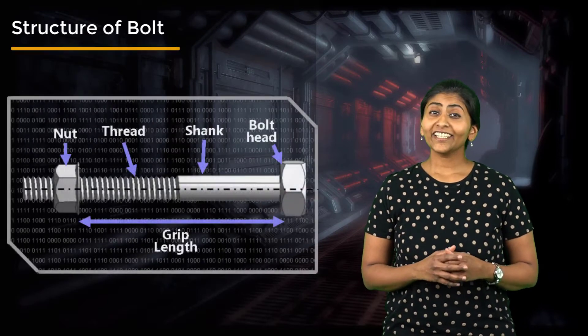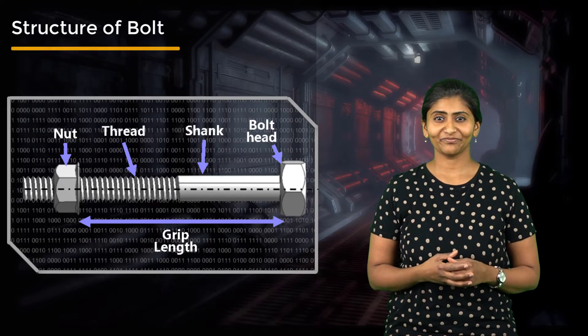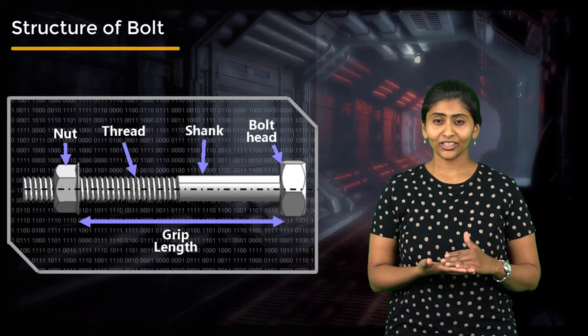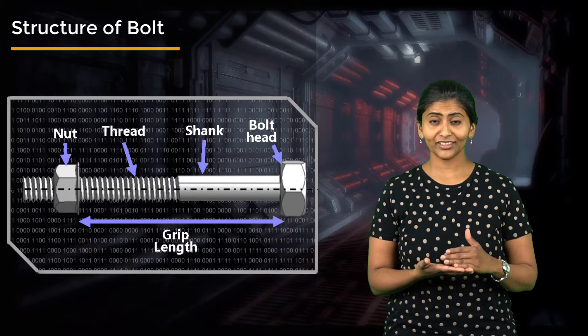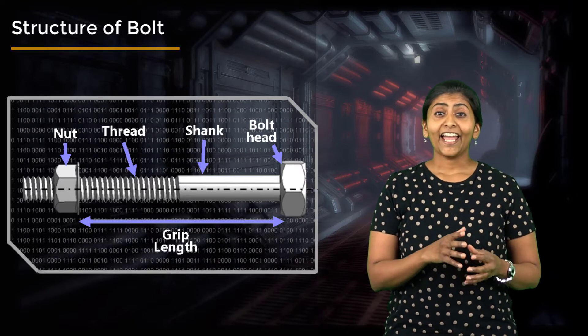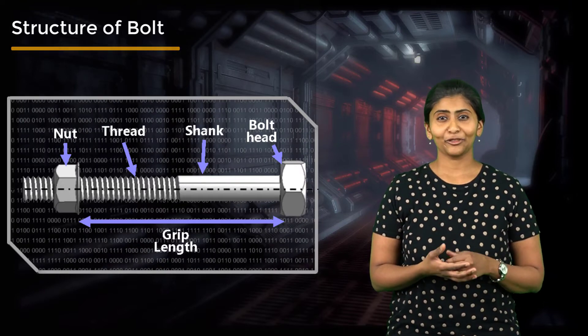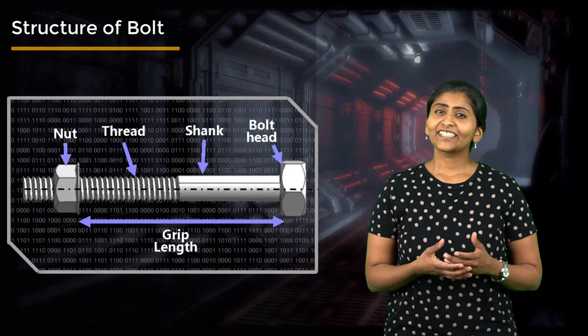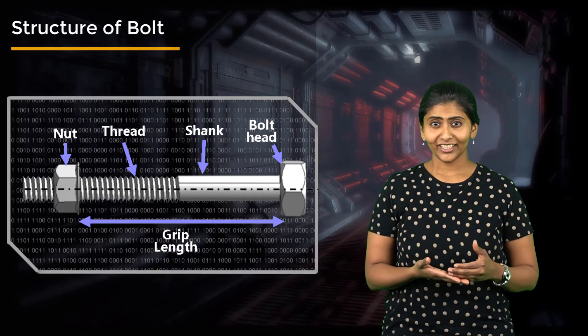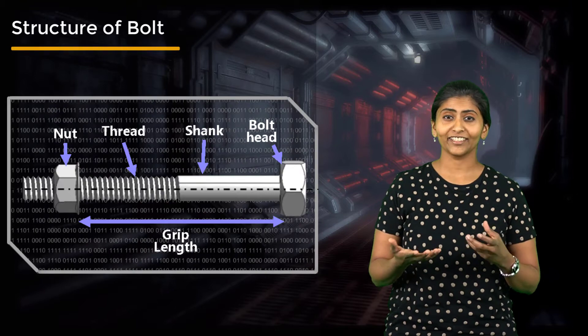Before we do that, let's revisit the structure of a bolt and nut assembly. The head is the flat portion of the bolt which transfers forces to the clamp plates. The nut and the bolt engage with each other via threads that are cut into them. Threads are helical grooves cut in the shape of V or square which is how forces are transferred between the bolt and the nut.